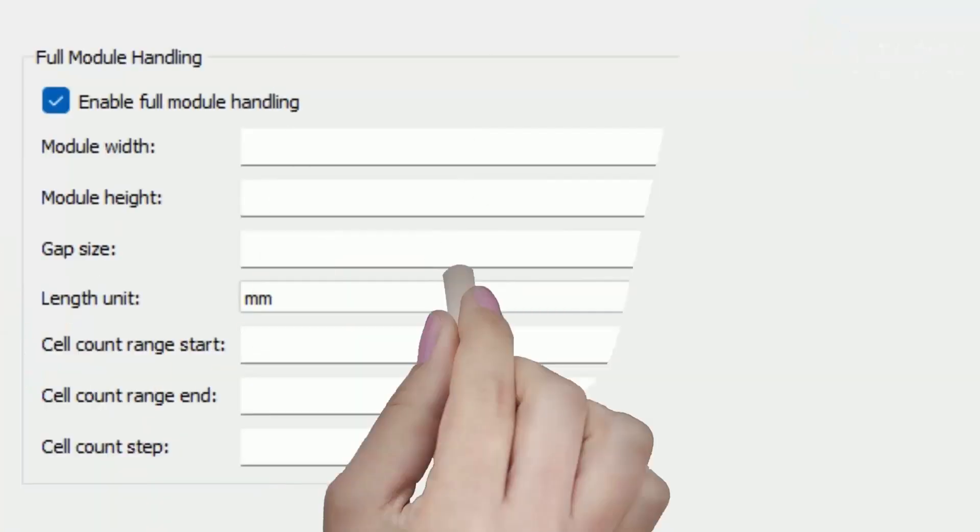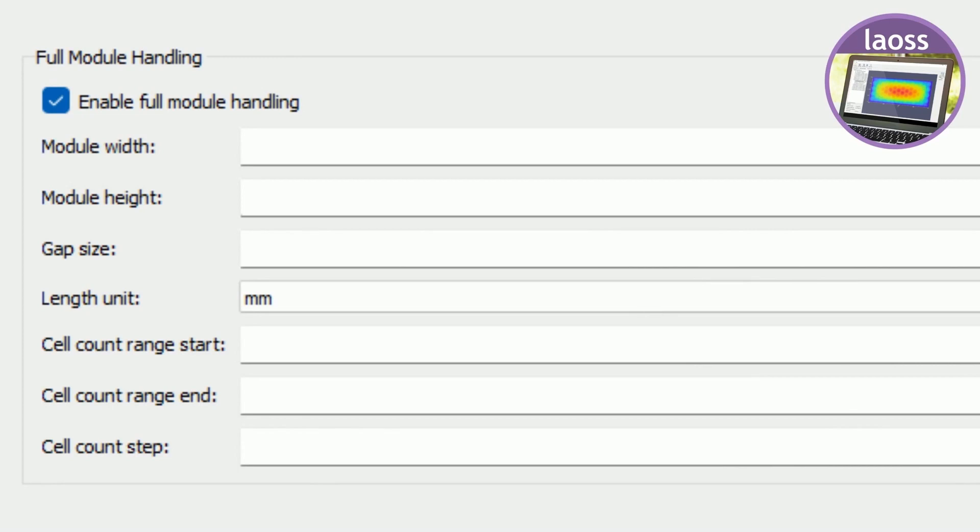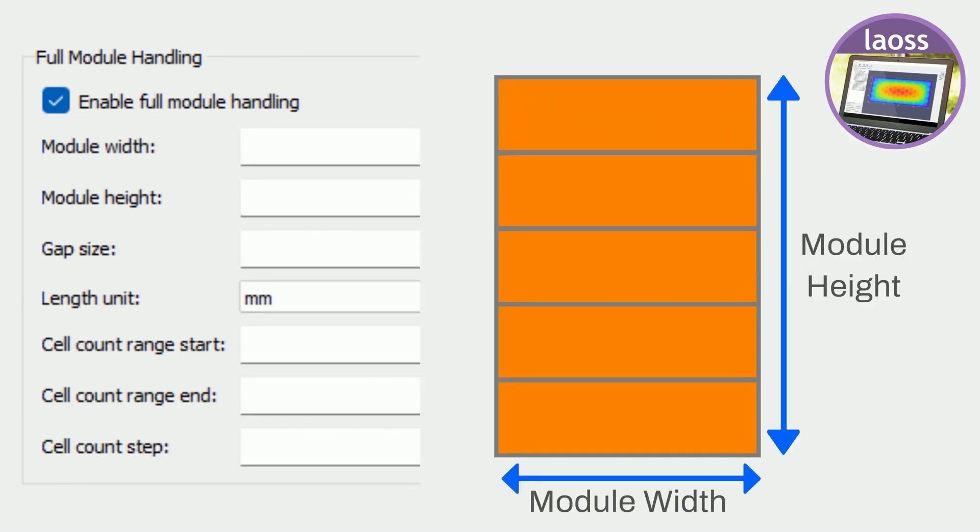Using Laos we can predict the optimal sub-cell area for maximizing power output. Laos predicts the JV characteristics of the large area module based on experimentally determined JV of lab-scale devices. To speed up this process we have developed a feature in Laos called full module handling. This feature lets us simulate various module sizes, easing the design process.